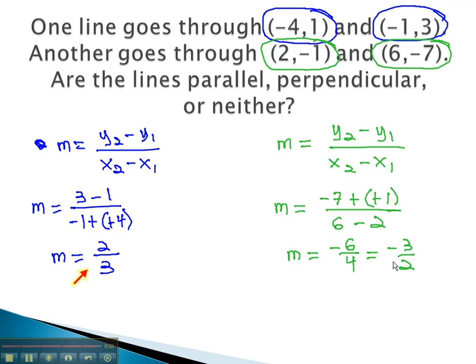Notice one is positive, one is negative, and the fractions have been flipped. We have opposite reciprocal slopes. These lines are perpendicular.